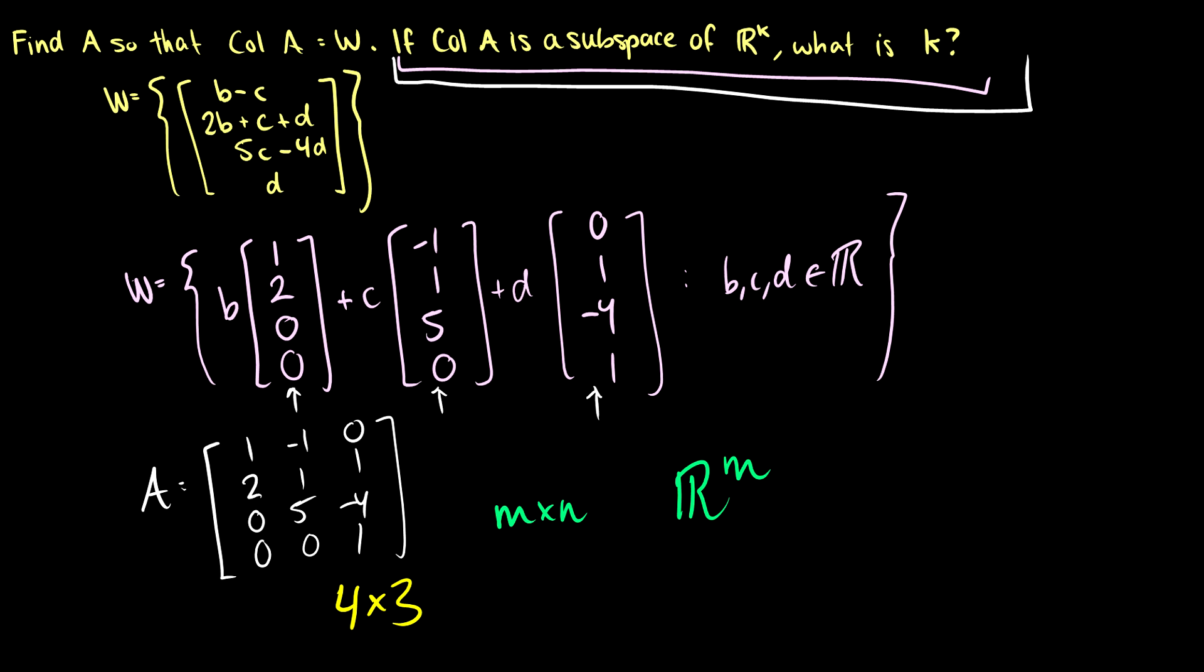So this matrix A is a 4 by 3 matrix. Therefore, the column space of A is going to be a subspace of R^4.